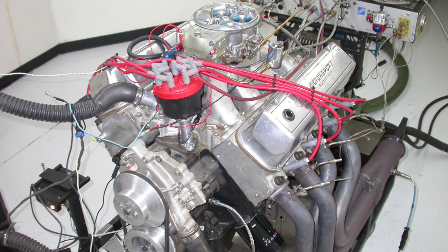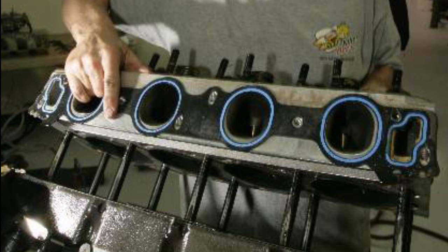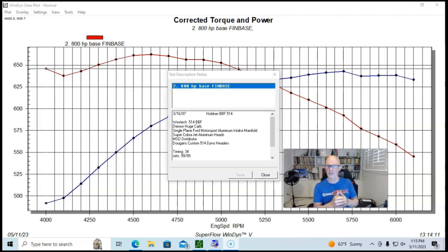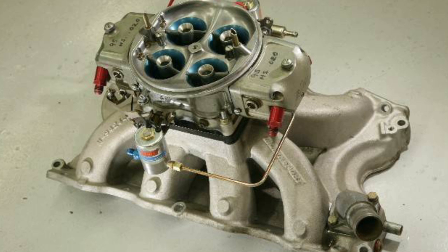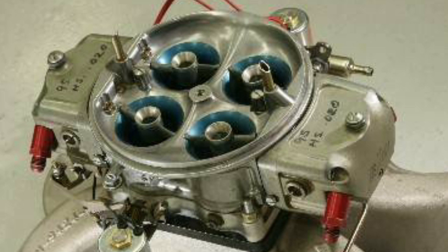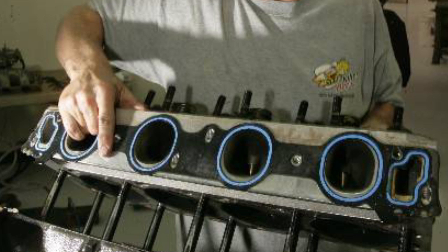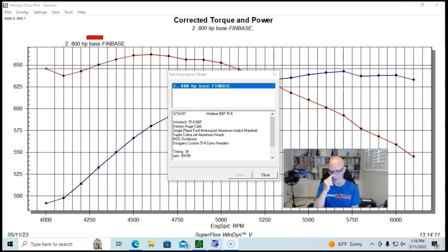Stepping things up to our 800 horsepower combination. This one actually was fairly simple. It started out as a Ford racing crate motor. This was 514 inches. And this was way back when they offered that. I'm not even sure they offer this crate motor anymore. But it was a 514. We had the single plane Ford Motorsports aluminum intake manifold. I think it was an Edelbrock Victor or Super Victor.